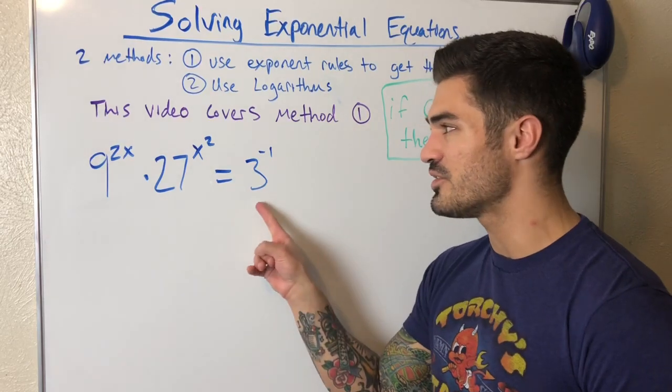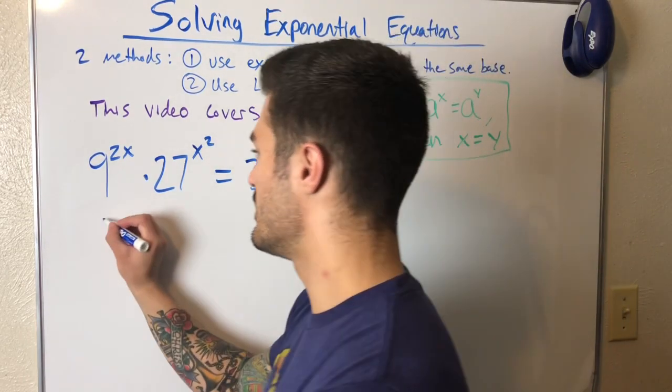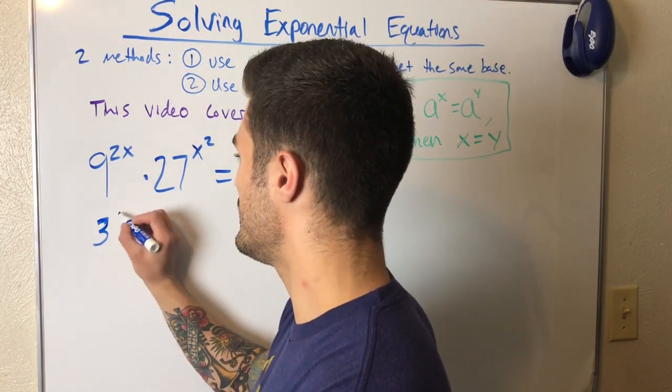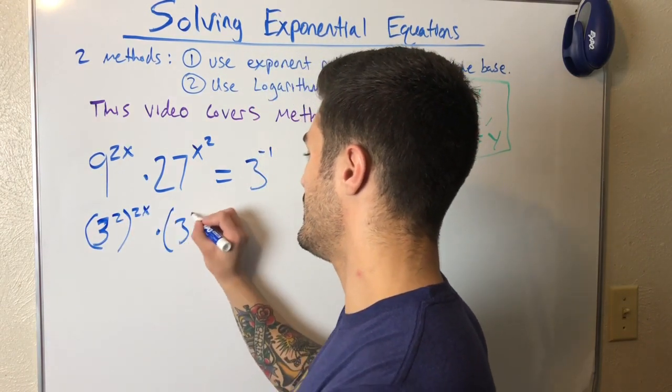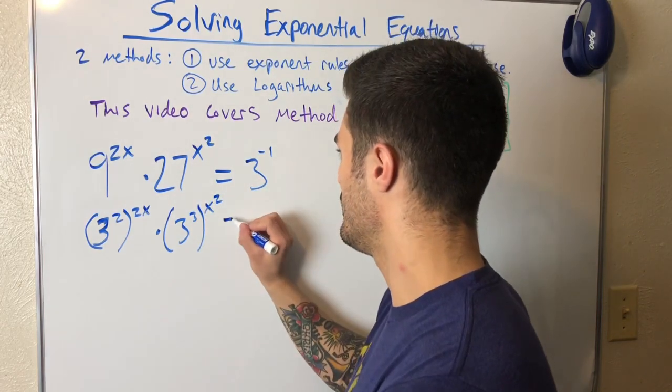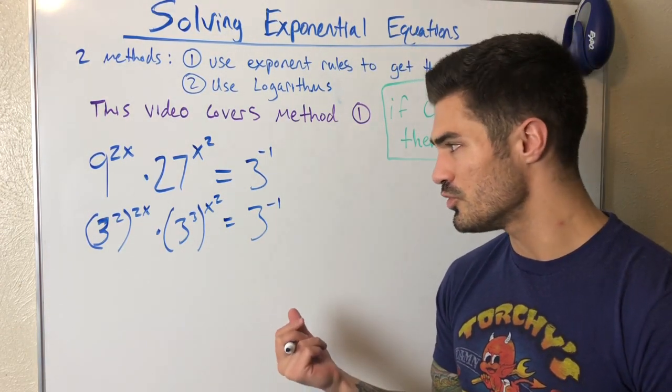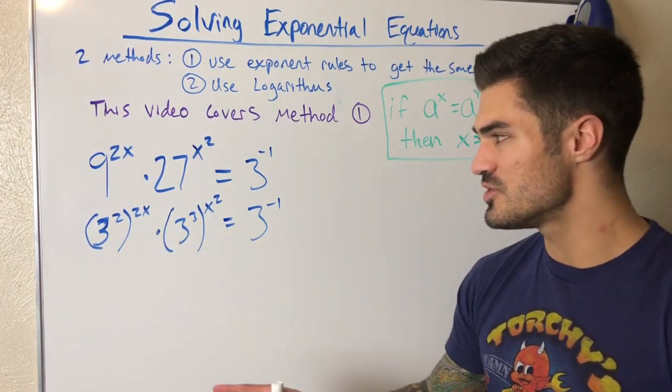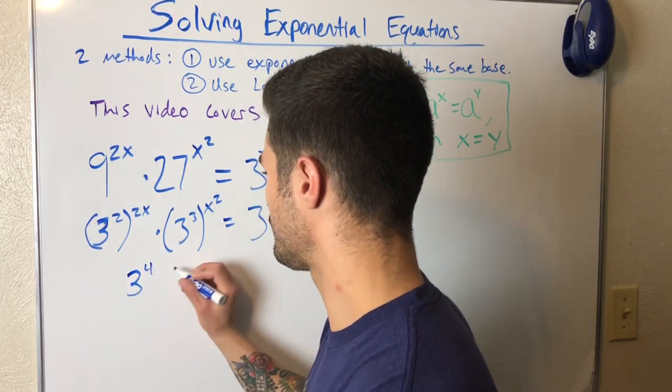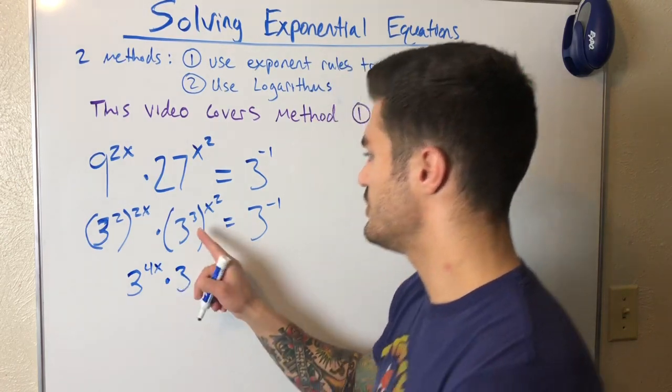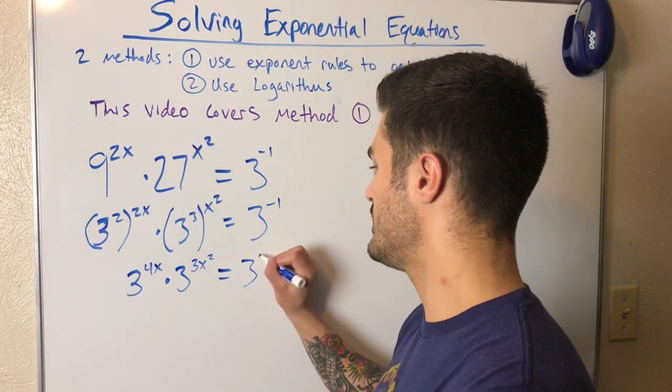I'm noticing a three in common since I already have a three here. Nine is just three squared and 27 is three cubed. So I'm going to rewrite all of these with the base three. I have three squared to the two x power times three cubed to the x squared power equals three to the negative one. You have to remember your exponent rules. You're going to multiply this through, two times two x equals four x. So that's three to the four x power times three to the three x squared power equals three to the negative one.